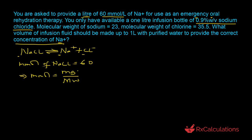Before proceeding, we need the molecular weight of sodium chloride. Most people know this from memory as 58.5, but we'll use the given values: the molecular weight of sodium (23) plus the molecular weight of chloride (35.5) equals 58.5. Typically the units are grams per mole, but due to how conversion factors play out, you end up with the same numeric value.